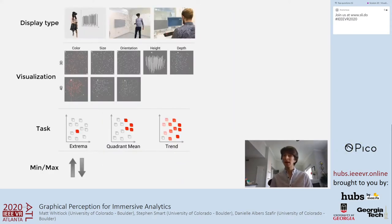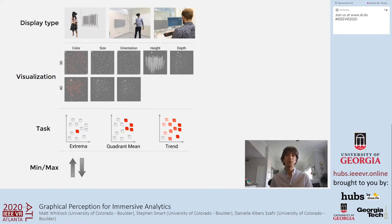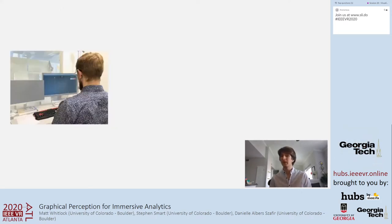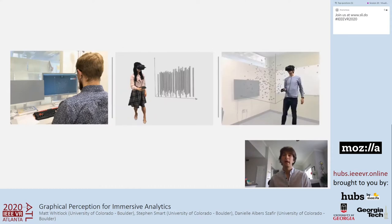We ran a 3x8x3x2 mixed-factor study with display type distributed between our 42 participants and all other factors within participants. Our aim was to get at differences in visualization perception for different immersive displays, considering several visualization designs and tasks. We looked at three different display types: the desktop condition, which allowed participants to look at visualizations on a 2D monitor.